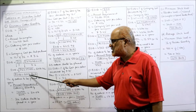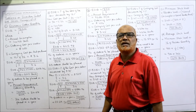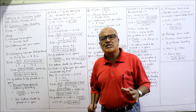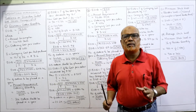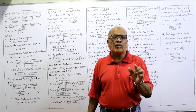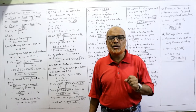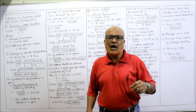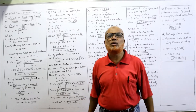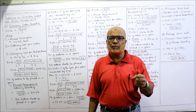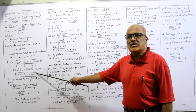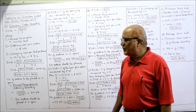Rounded off, the EOQ is 6019 units. While watching the video I suggest you keep a notebook, calculator, and pen ready and note down the formulae immediately, because writing things down helps you remember and build confidence on the topic.